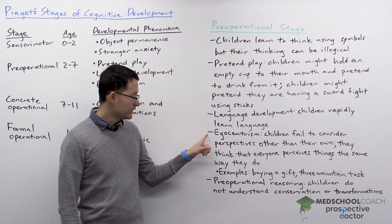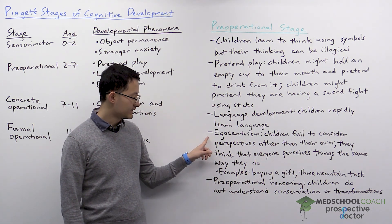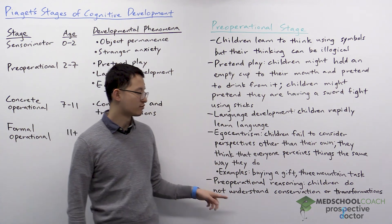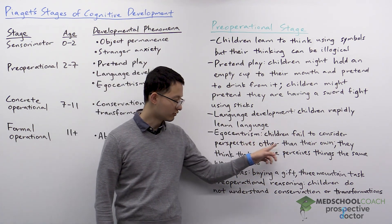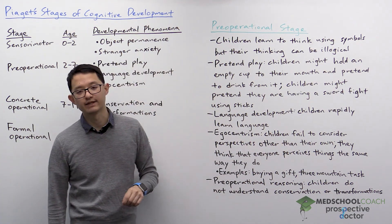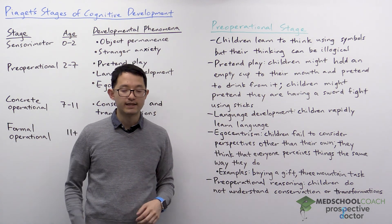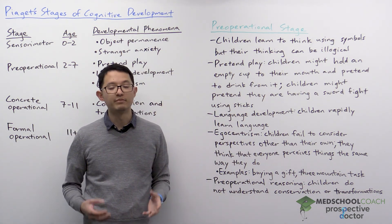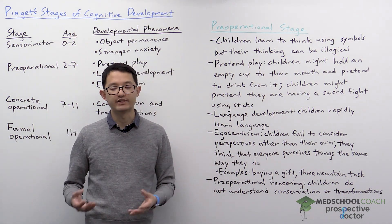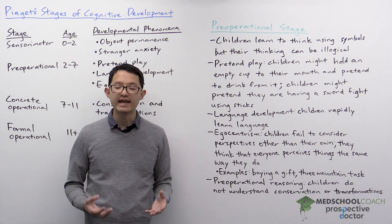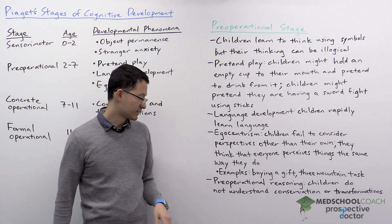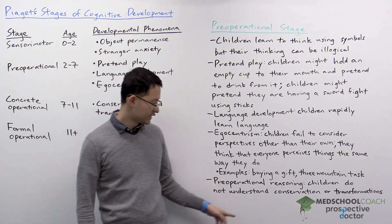One developmental phenomenon in this stage is egocentrism. Egocentrism is when people — or in this case, children — fail to consider perspectives other than their own. These children believe that the way others perceive a situation is the same way they perceive it. To illustrate this, we can consider a couple of examples.